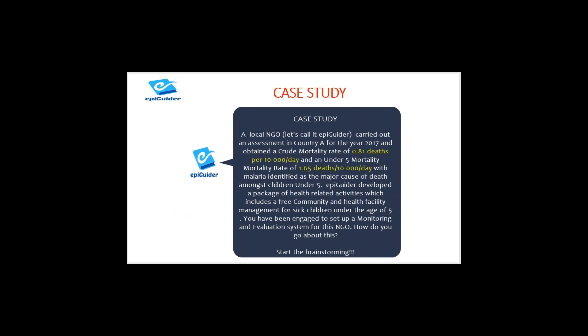Let's now look at the project we will be handling. This is actually a project I worked on myself, and I believe we are going to have some fun while learning. A local NGO — let's call it Epiguider — carried out an assessment in a country in the year 2017 and obtained a crude mortality rate of 0.81 deaths per 10,000 per day, and an under-5 mortality rate of 1.65 deaths per 10,000 per day, with malaria identified as the major cause of death amongst children under the age of five.